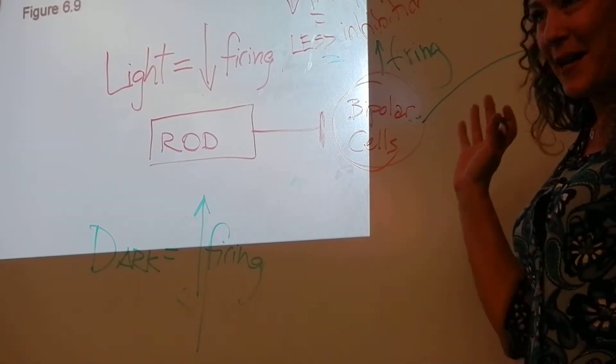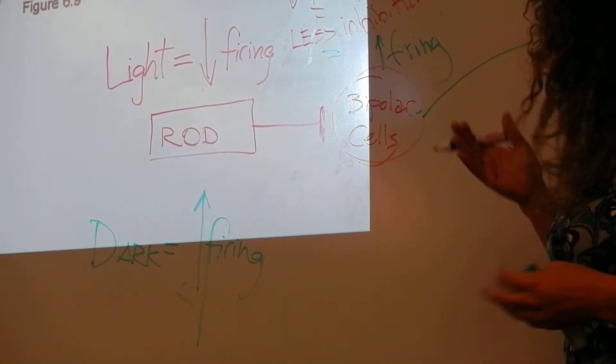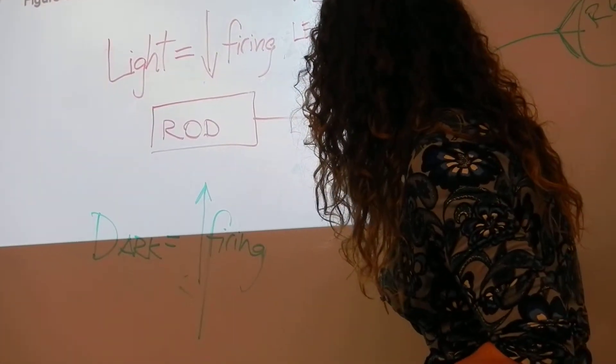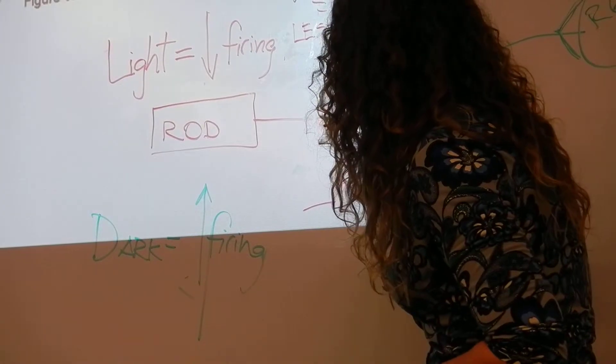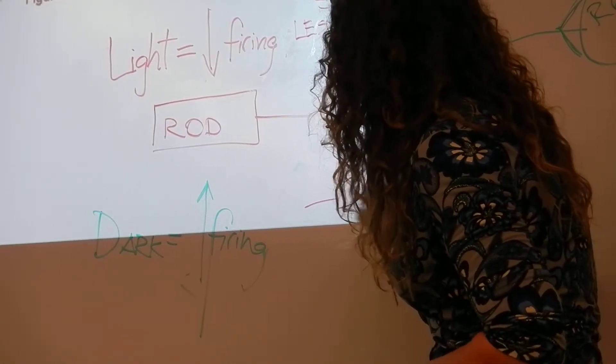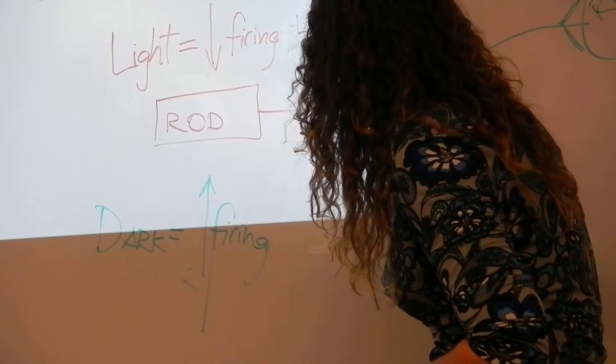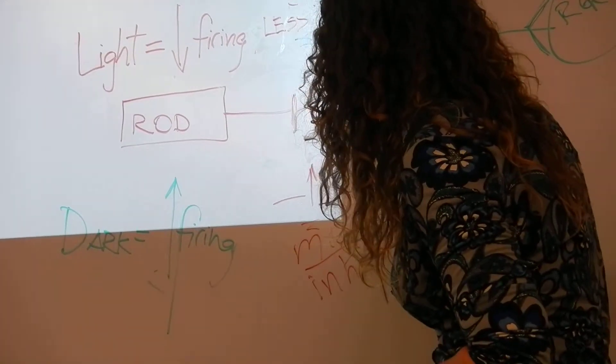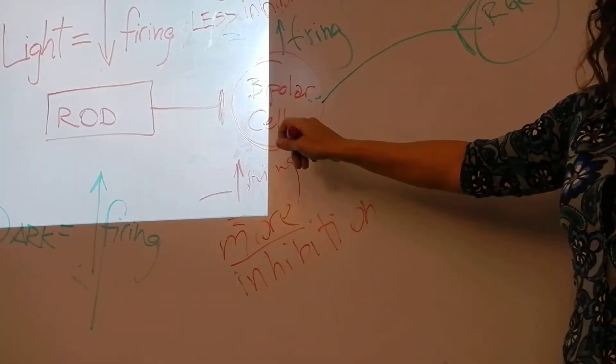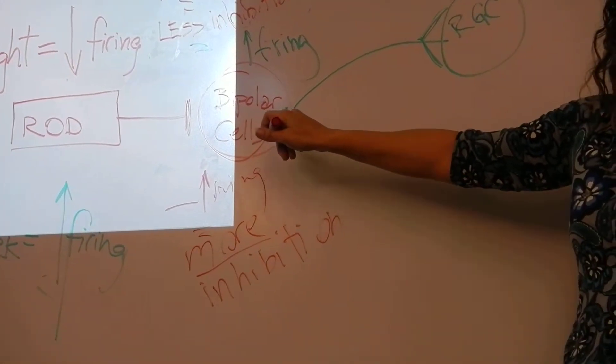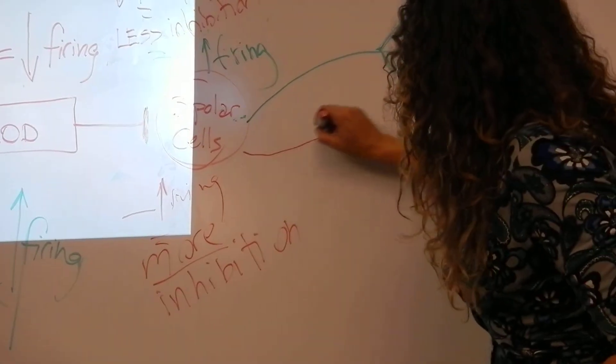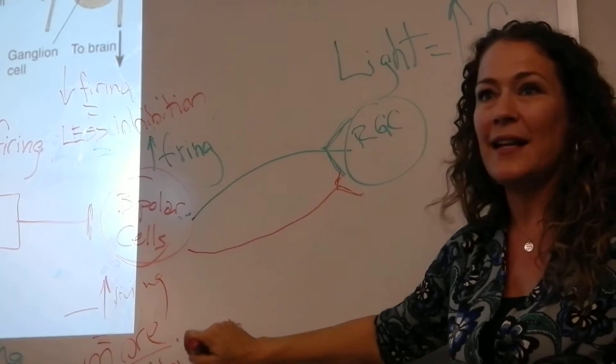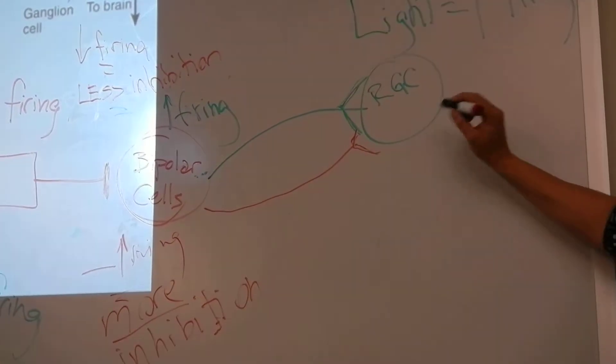The more he's inhibiting, the more it's like not letting you talk. So more firing here from this guy, more firing equals more inhibition. More inhibition for this guy, is he going to be more or less likely to fire? Less. Less likely to fire. He's got an excitatory effect on this cell, but since he's less likely to fire, this guy is less likely to fire.